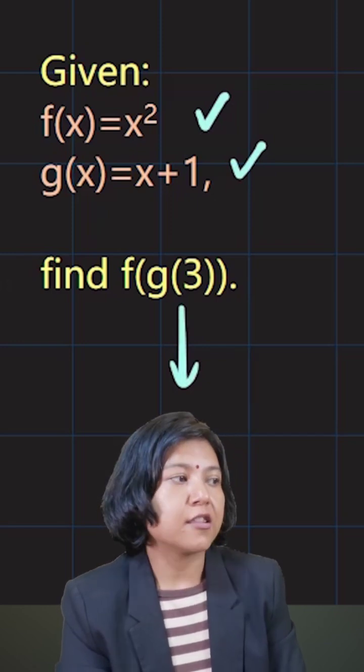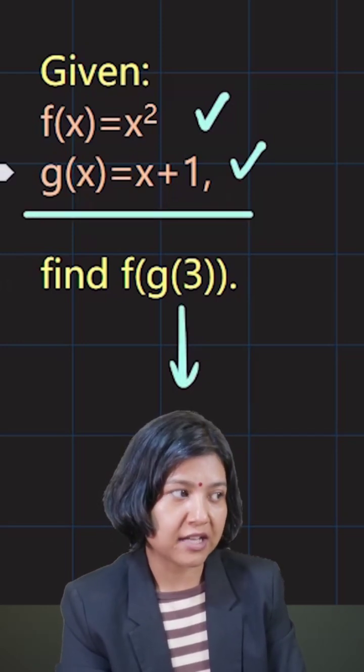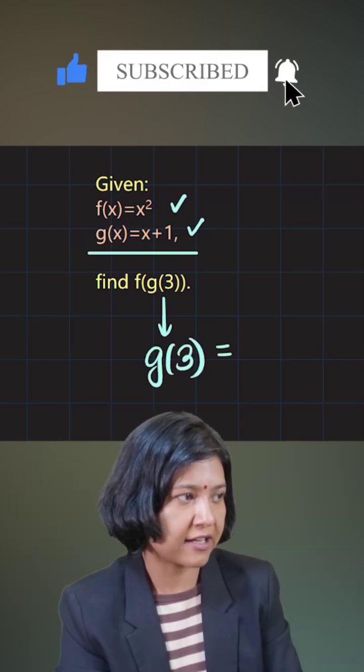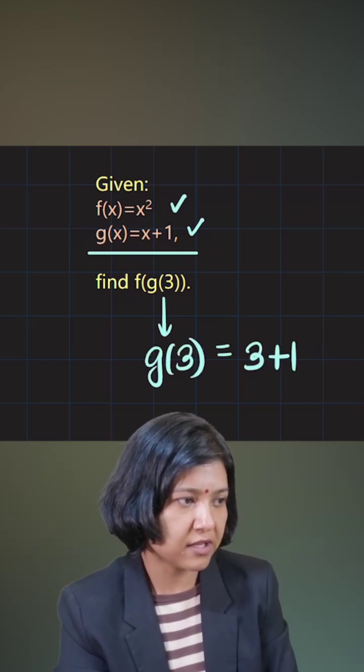So g(3) - in this function you are putting the input as 3. g(3) is simply found by keeping the x value as 3 plus 1, which gives me 4.